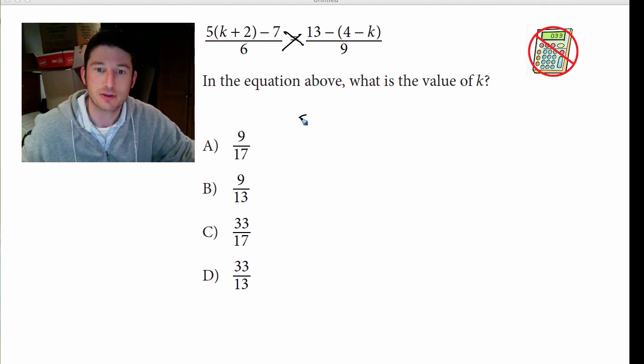So let's distribute this 5. So that would be 5k plus 10 minus 7. And I can simplify that even more. But let me just put this over 6.